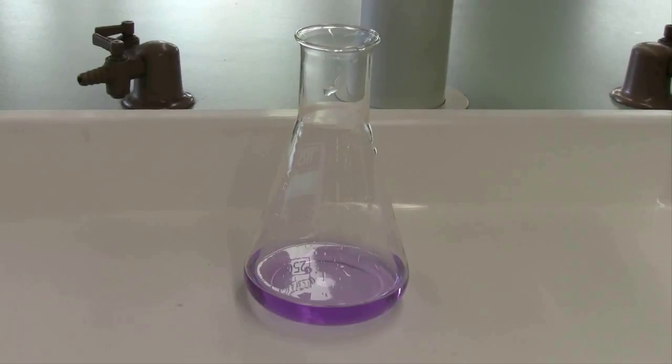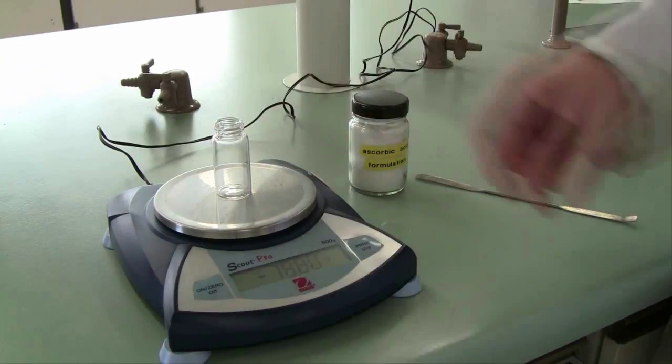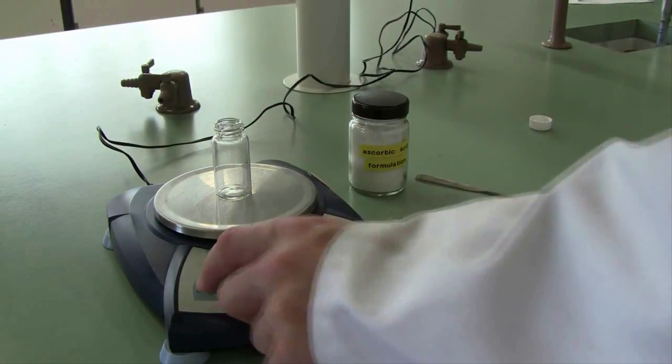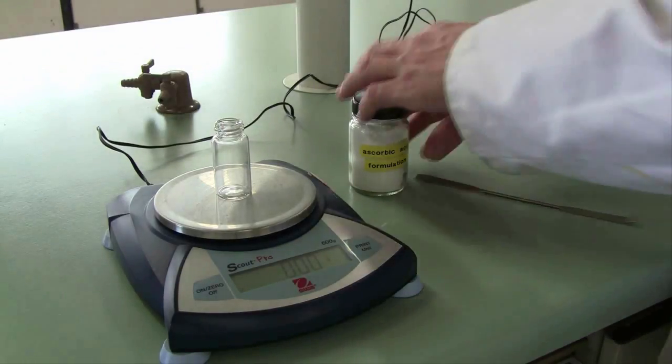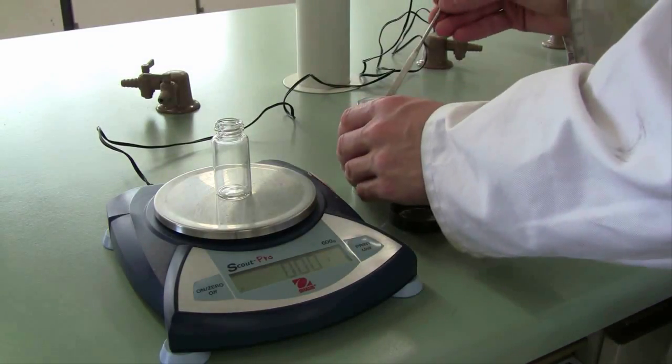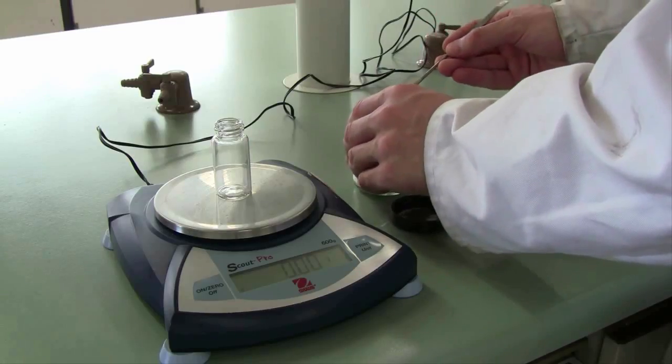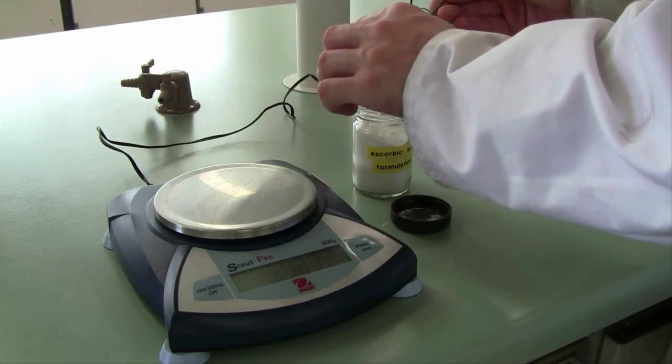Once you've completed these titrations, it will then be time to move on to the ascorbic acid analysis. Use a top loading balance to weigh out approximately 0.4 grams of the ascorbic acid formulation. The exact mass isn't important as long as it is close to that 0.4 grams - somewhere between 0.35 and 0.4 grams will be fine.